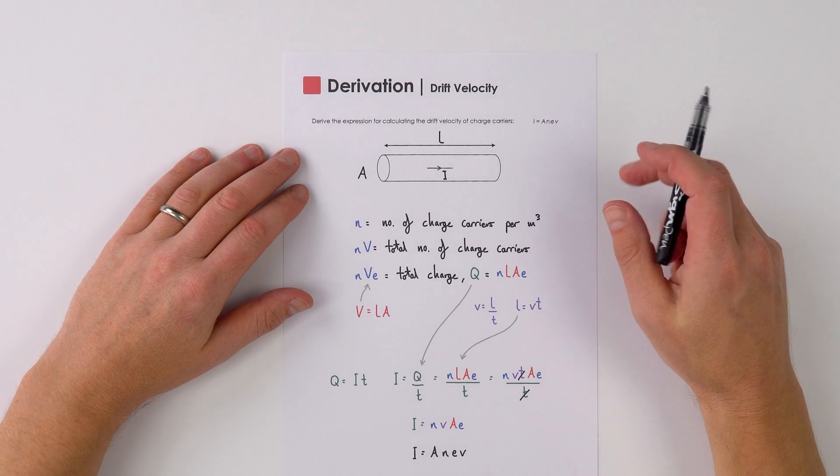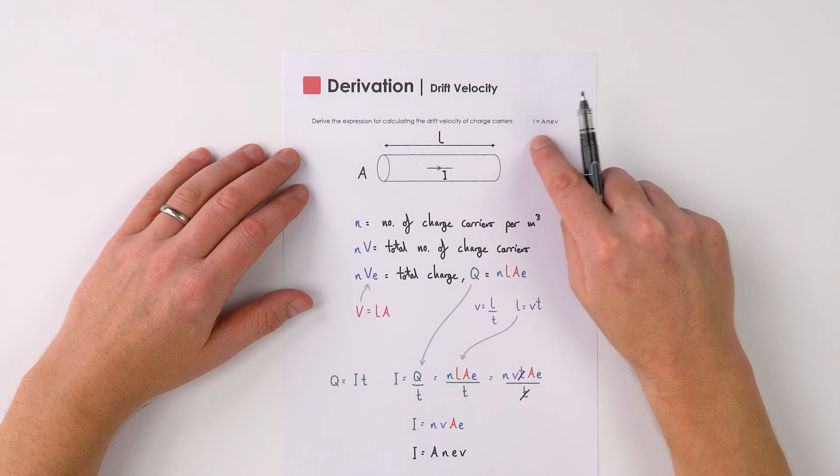This is how to quickly derive the equation for drift velocity of charged carriers moving in a wire.